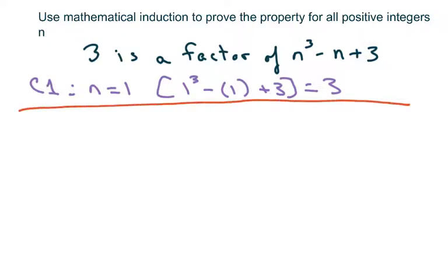And now we're going to check for some k, n equals k. I'm going to just rewrite this, k cubed minus k plus 3. So, we're going to see if it holds for all positive integers, k.